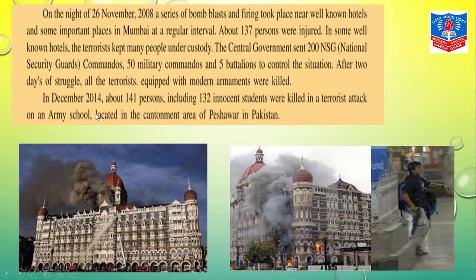In December 2014, about 141 persons including 132 innocent students were killed in a terrorist attack on an army school located in the cantonment area of Peshawar in Pakistan. All these examples show that terrorism never sees any caste or religion — they just want to attack humanity.